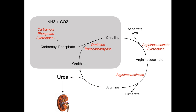Here's the overview of our cycle, and there are a few important high-yield concepts to keep in mind. One: the rate-limiting enzyme is carbamoyl phosphate synthetase 1. Whenever you're studying biochemistry, the most important thing you can take away from every chemical reaction is what is the rate-limiting enzyme. In this case, it's carbamoyl phosphate synthetase 1.